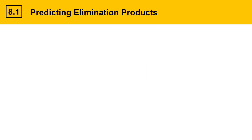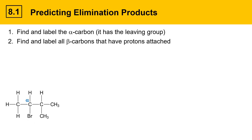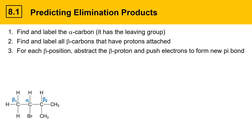Next, we're going to look at a systematic way to predict elimination products. This is important when solving problems that ask you to predict products in elimination reactions. Starting with a secondary alkyl bromide: the first step is to find and label the alpha carbon — the carbon that has the leaving group. Then find and label all the beta carbons, which are positions next to the alpha carbon that have protons attached. In this case, there's a beta position on the left with three identical protons, and another beta position on the right with one proton and two methyl groups. I've labeled those beta 1 and beta 2, because when they react they give different products. The next step is for each beta position, abstract that beta proton and push electrons to form a new pi bond.